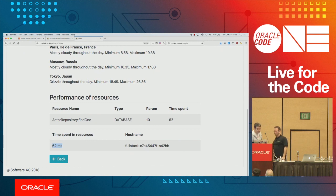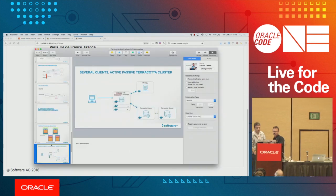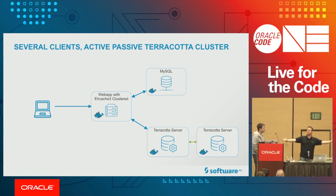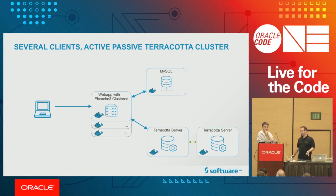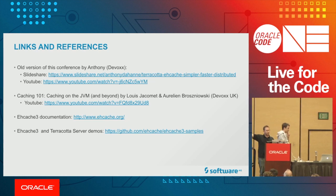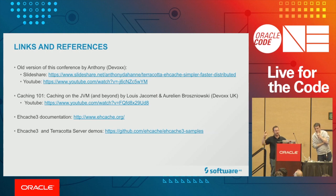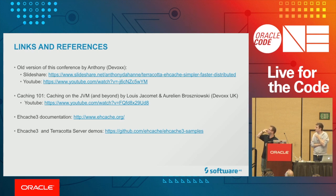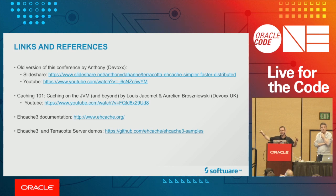That's the most complicated but most efficient way you can do caching — clustered caching with different layers. That's the most evolved possibility. Old versions of the conference slides are available on SlideShare and we'll put this one up as well. There's also a Caching 101 talk you can look at. For EhCache, the documentation is at ehcache.org. The EhCache and Terracotta server demos are on EhCache Samples on GitHub — we maintain them so they should always be up to date with everything presented today.